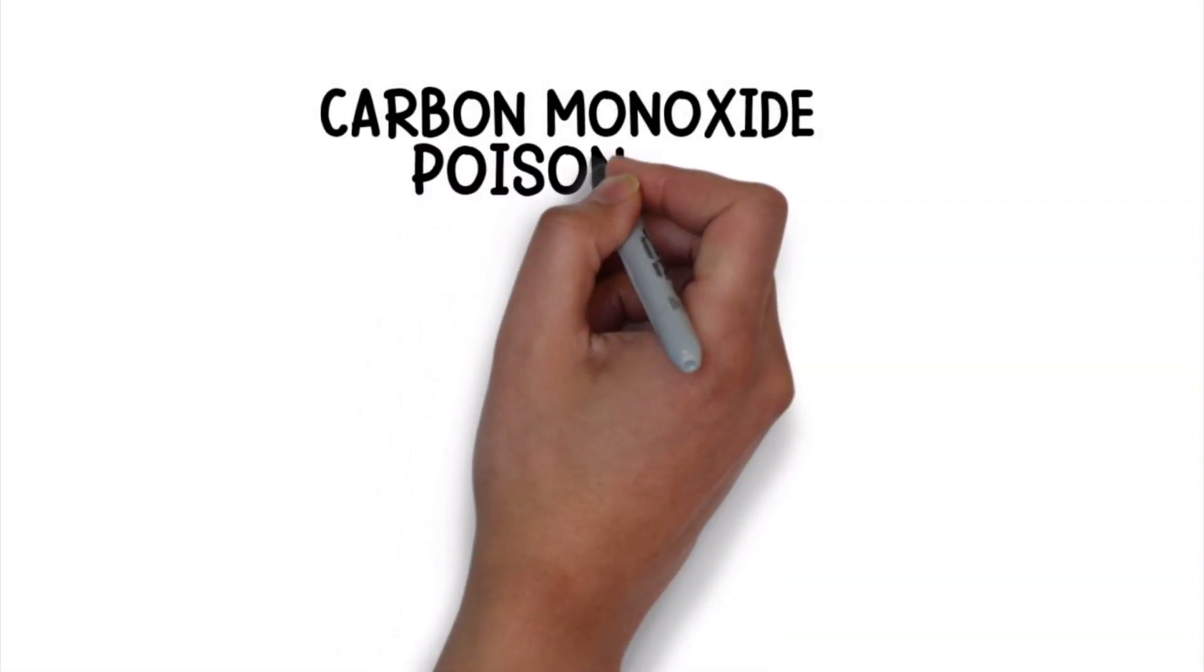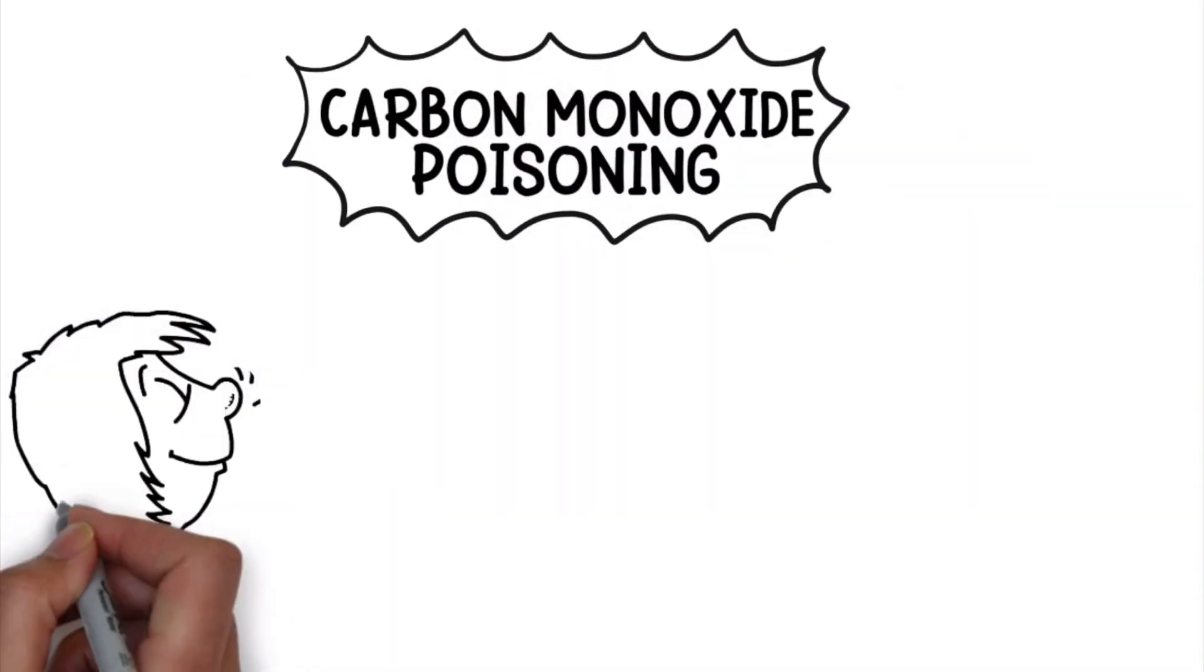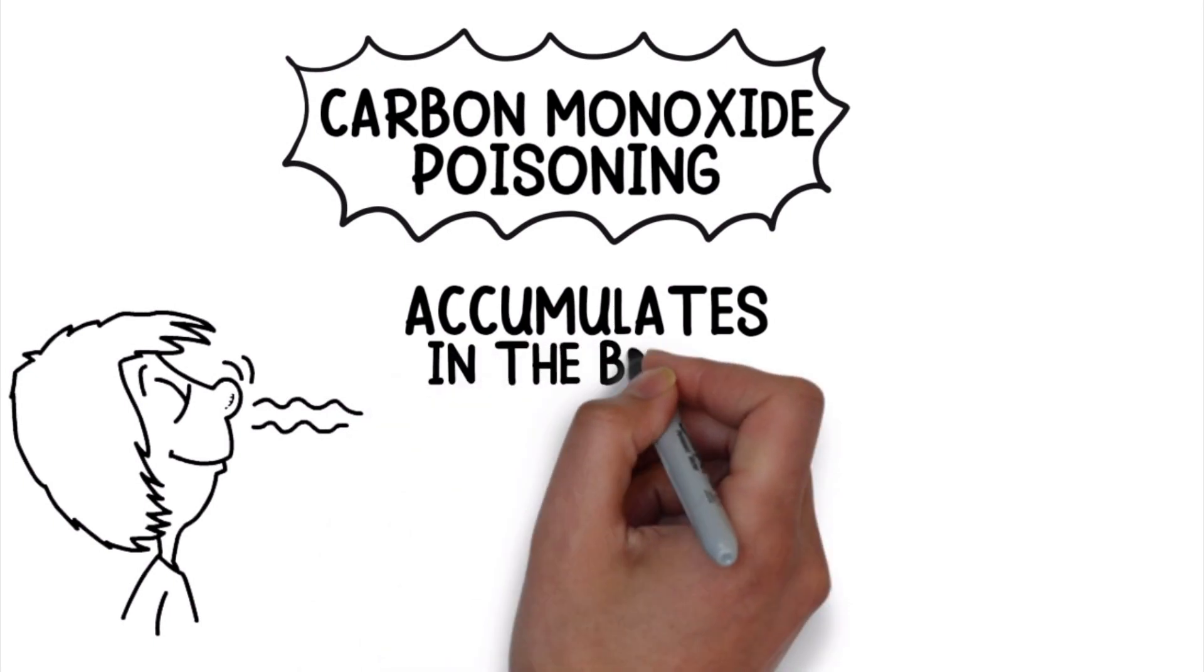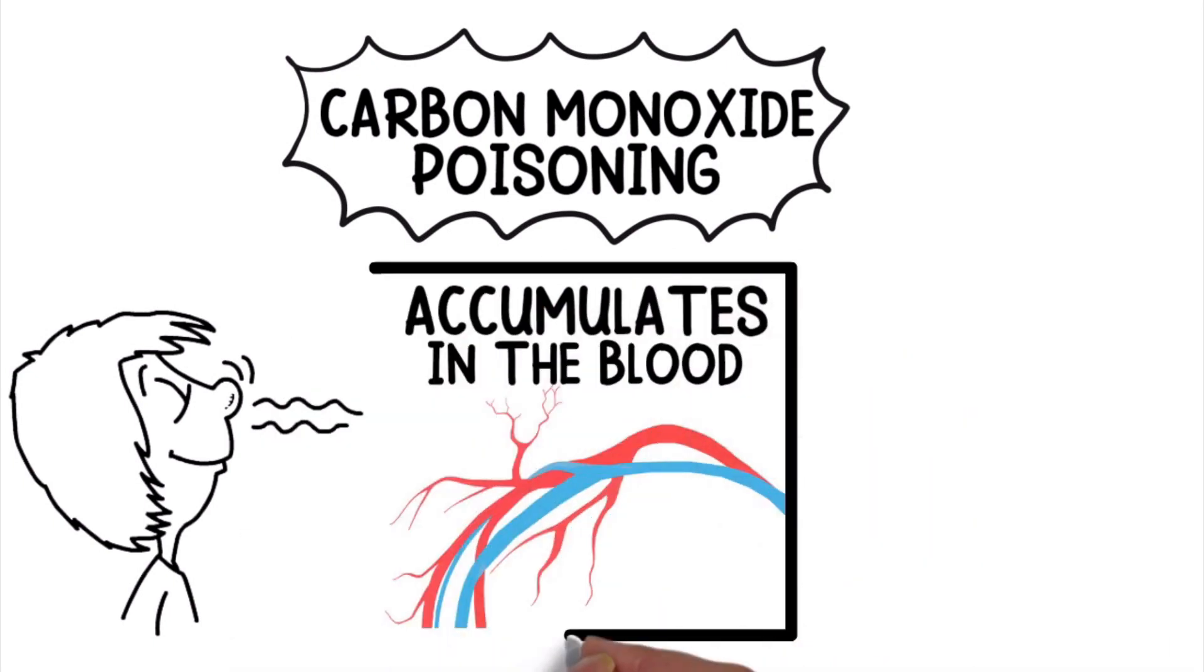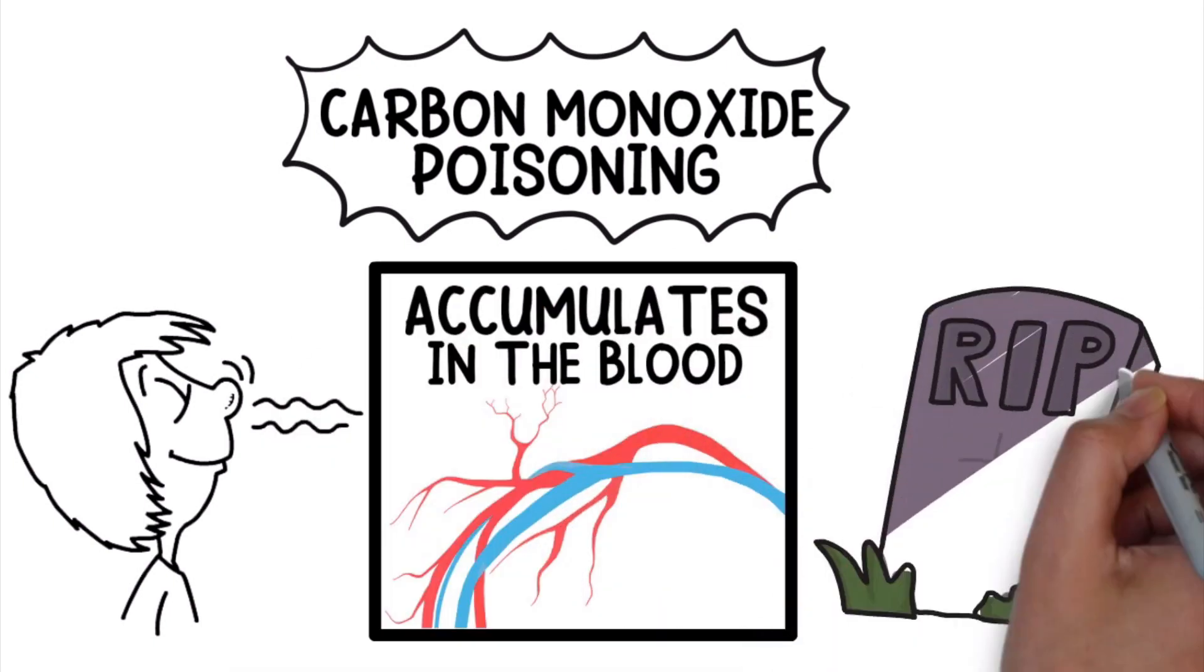As we just mentioned, carbon monoxide poisoning occurs when excess carbon monoxide is inhaled and accumulates in the blood which can cause serious tissue damage and even death in some cases.